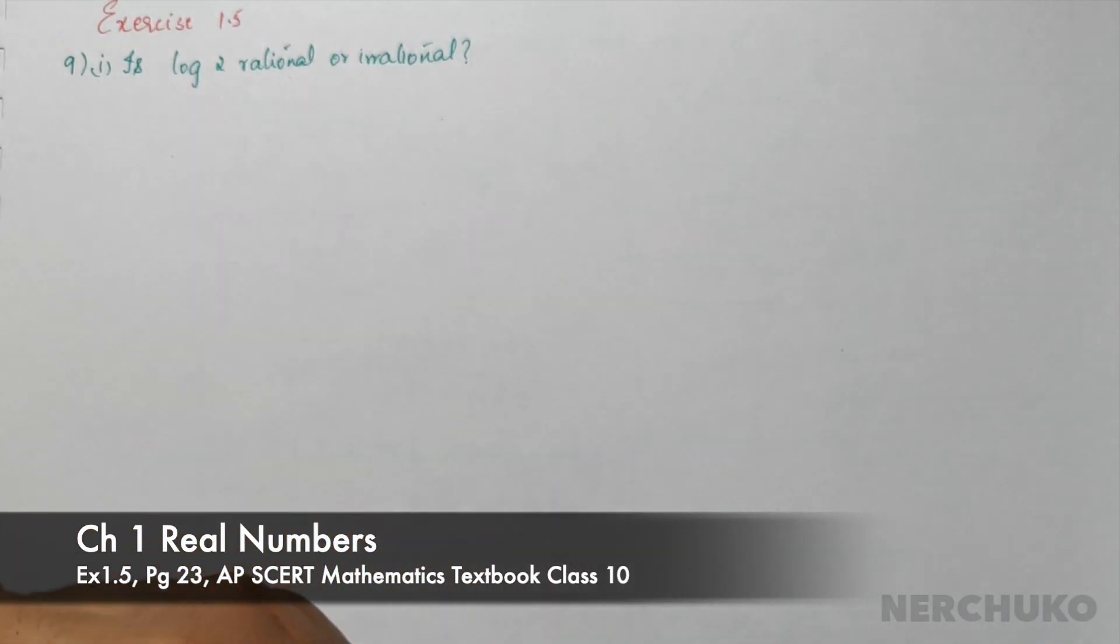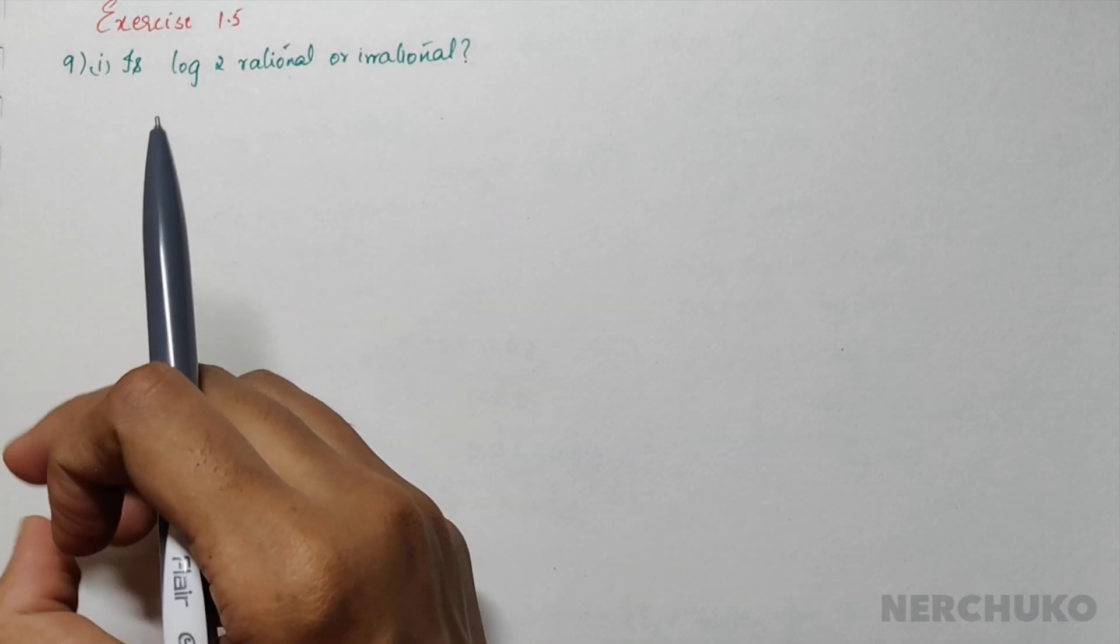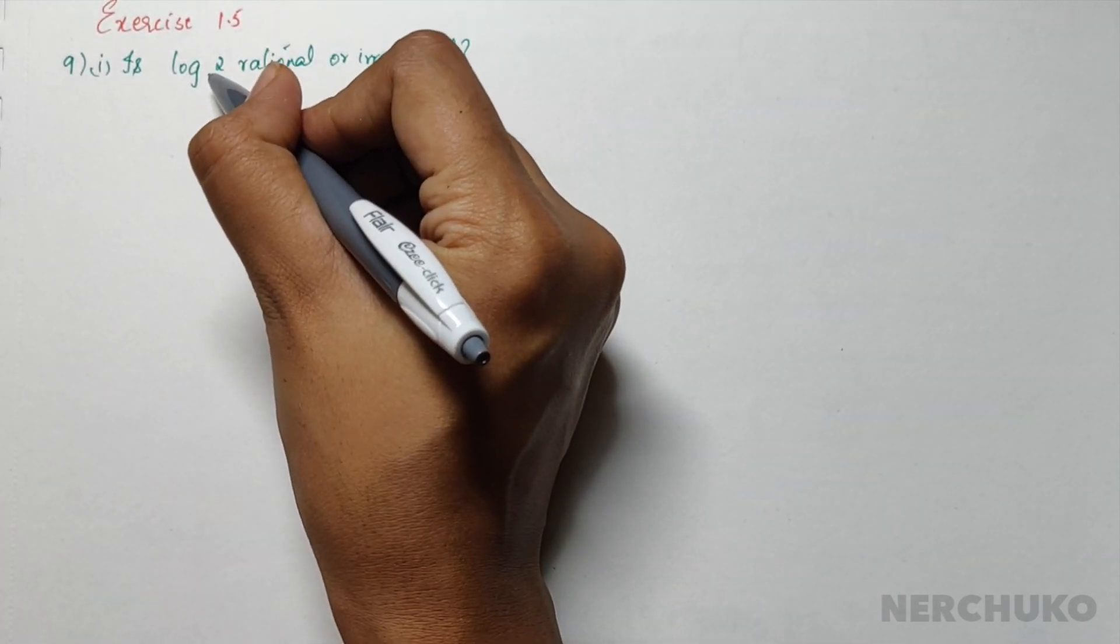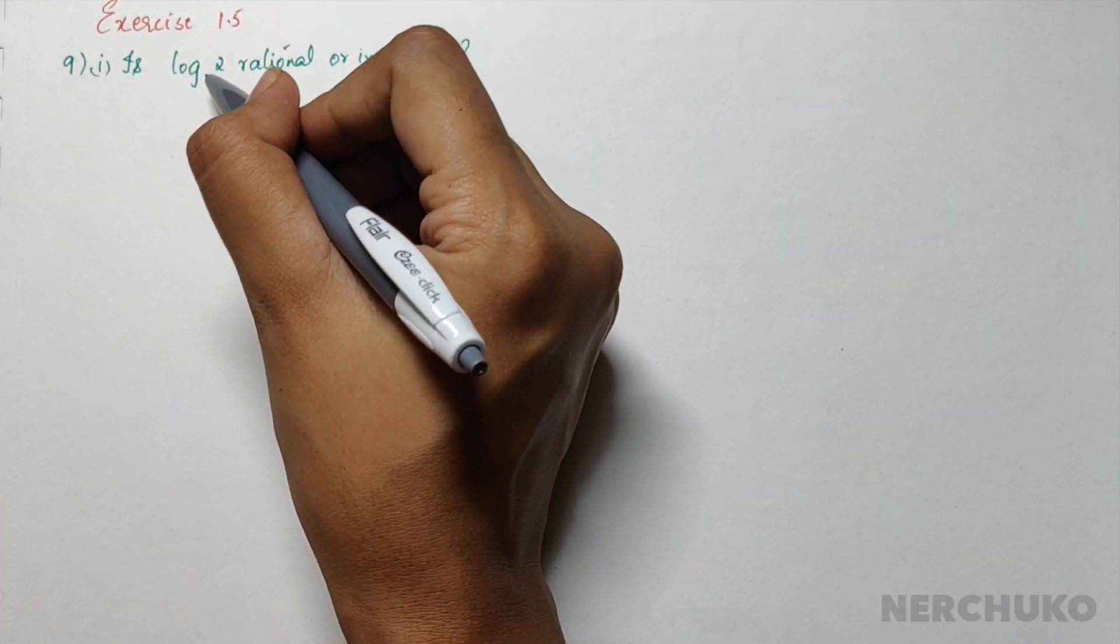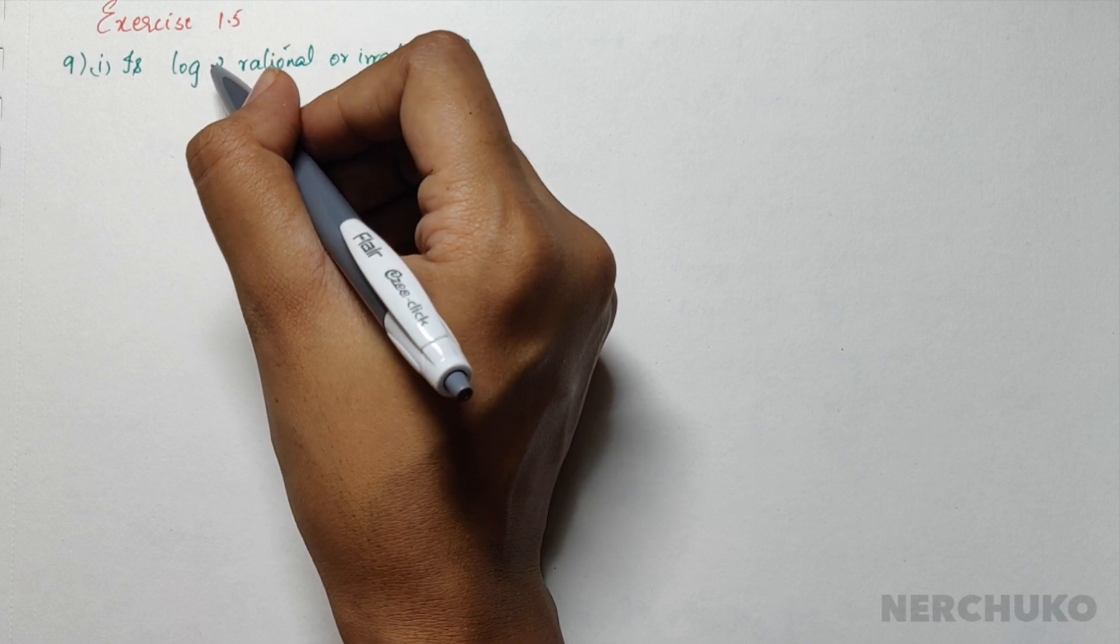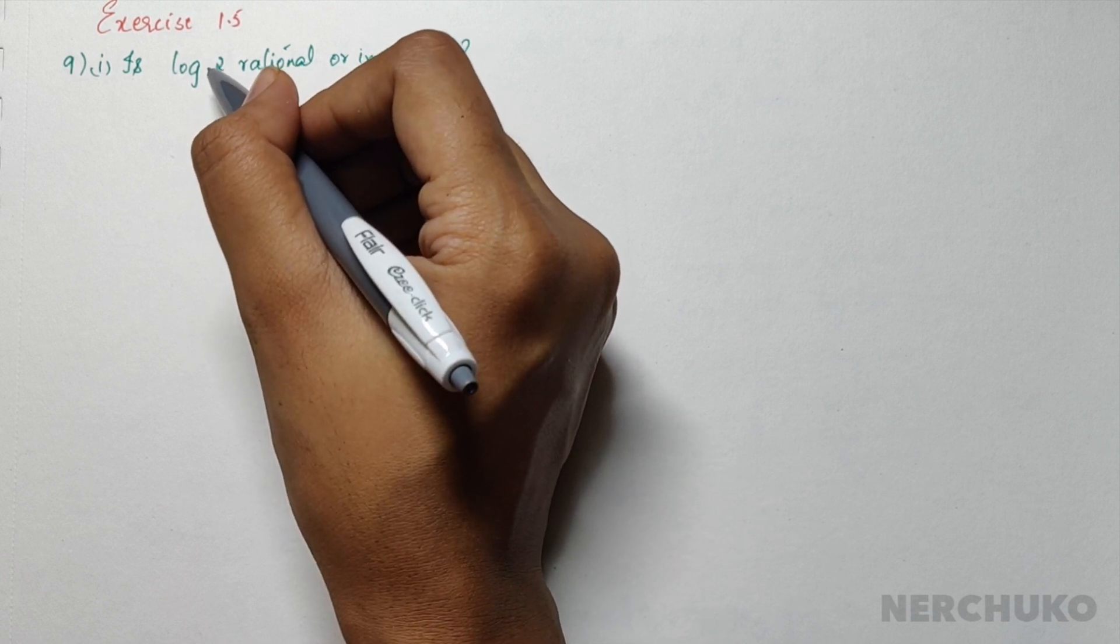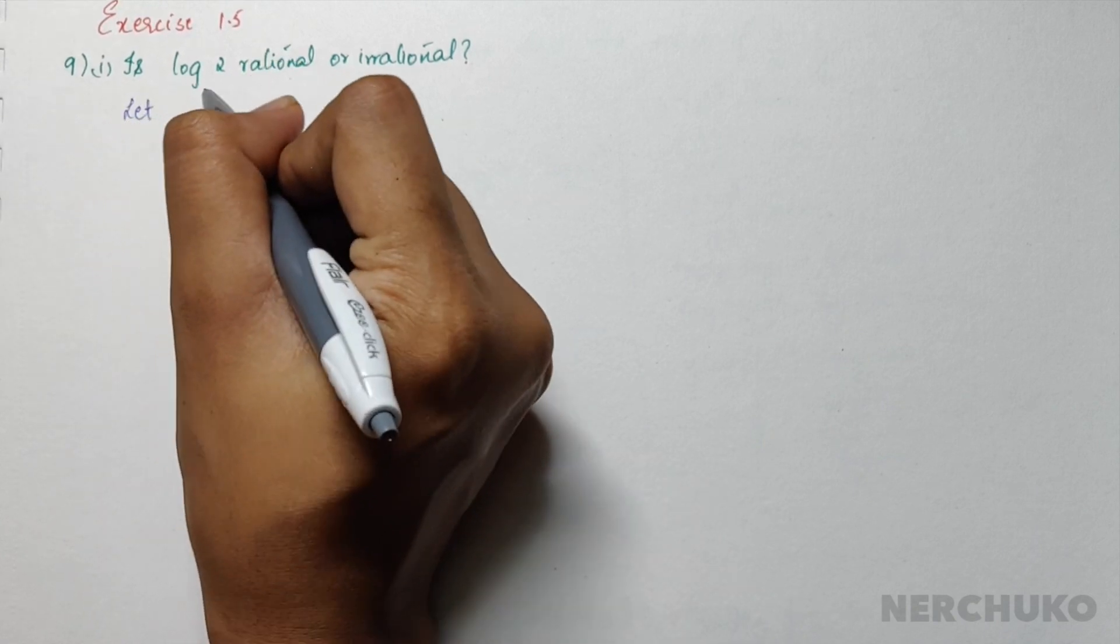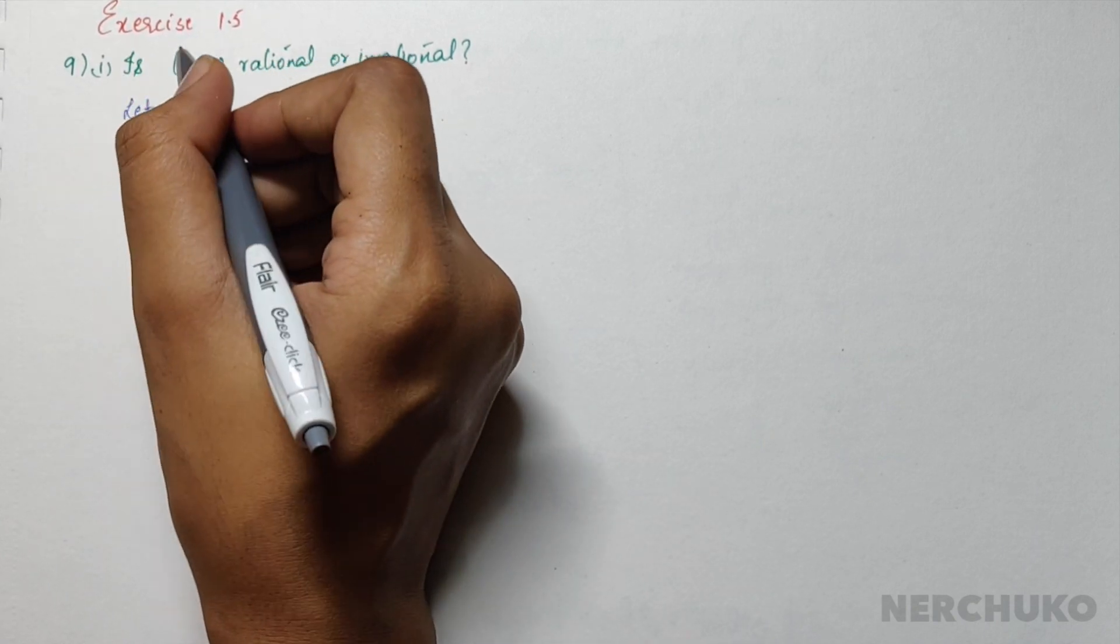Is log 2 rational or irrational? Before we move on to the solution, you have to understand that when the base isn't mentioned, we automatically assume that the base is 10. So considering that same assumption, I will go further with this problem. Let me try to prove that log 2 is rational and let's see where this goes.